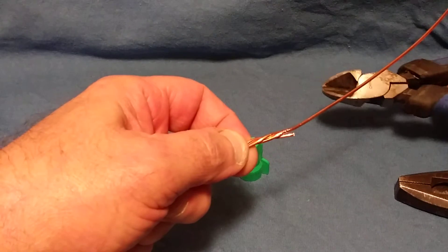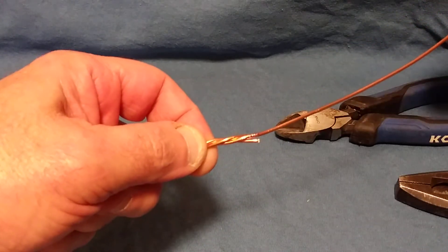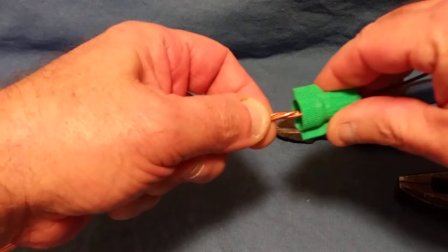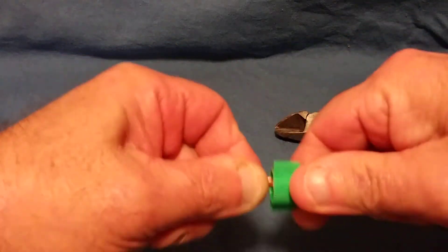Then you take your green wire nut and you just put it on the three wires like this.